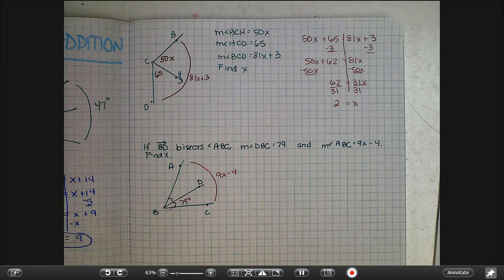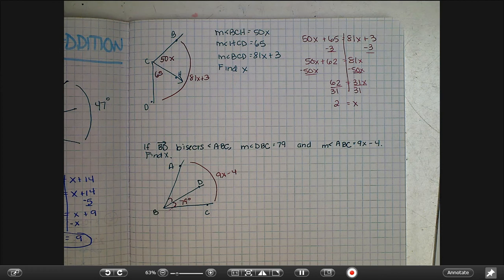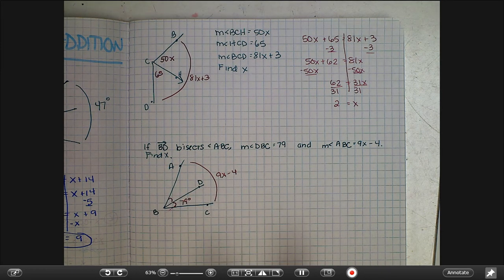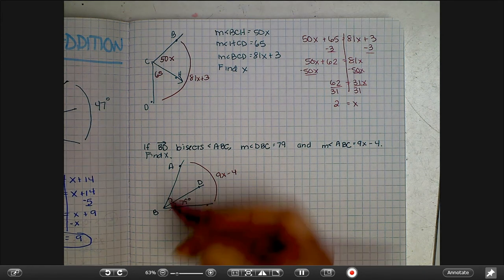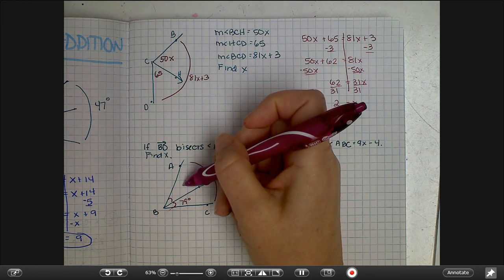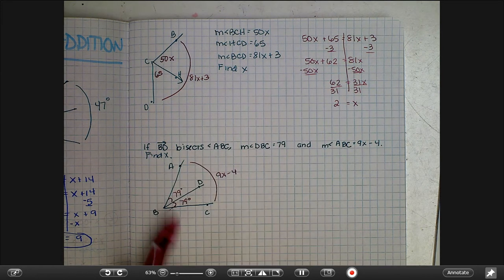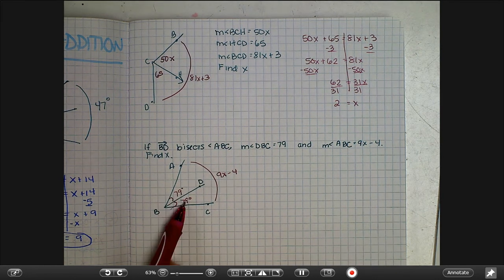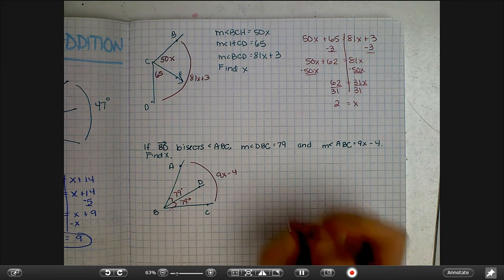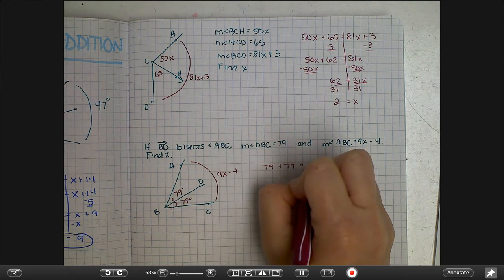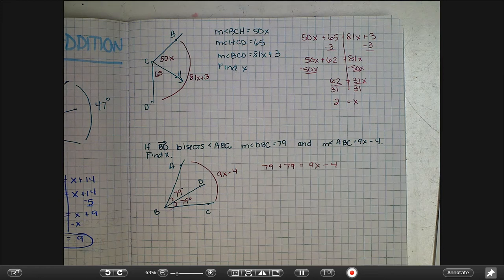Now normally we've been using piece plus piece equals whole. We're missing a piece right now, or we could use that this side and this side are equal and set up an equality. But this time that really won't work because we don't have anything here. So what would go here? Good, you should have 79 degrees because this was bisected, which means the two parts have to be congruent. So we know that 79 plus 79 has to be equal to 9x minus 4. Piece plus piece equals whole.